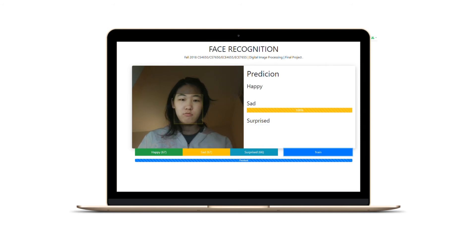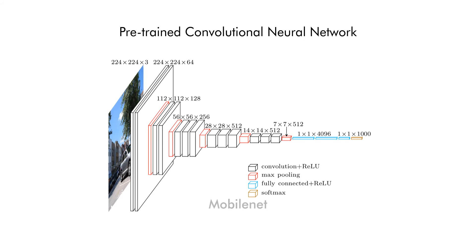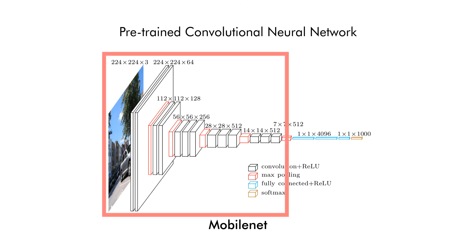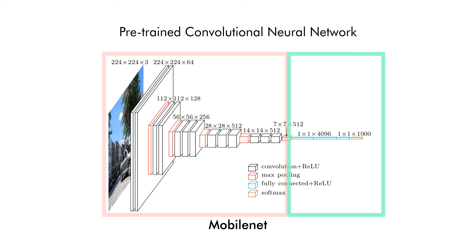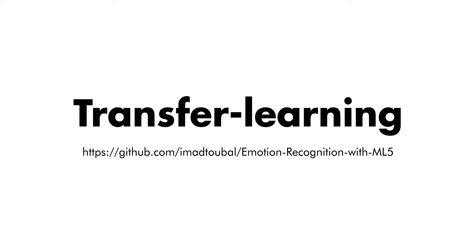This may seem like magic given the fact that our dataset hasn't been huge. However, this is possible as we're using a pre-trained convolutional neural network model called MobileNet. MobileNet provides a CNN that is trained on different sets of images, meaning its convolutional layers serve as a great feature extractor, which in turn means we're only going to need to train the dense layers in the neural network, making the training process go much faster. This technique is called transfer learning, and we go more thoroughly into that in our report and our code repository.